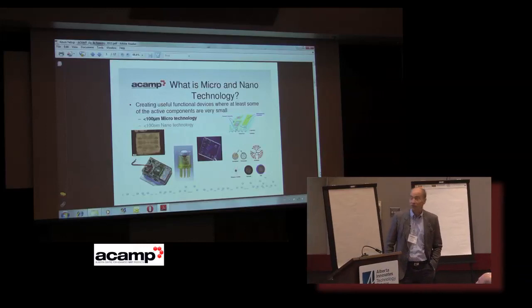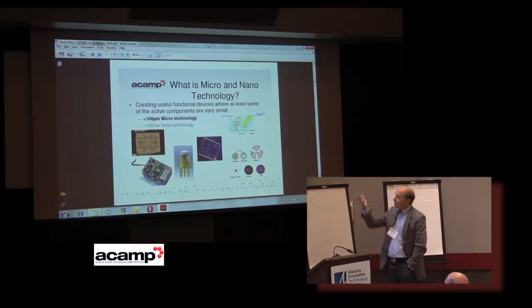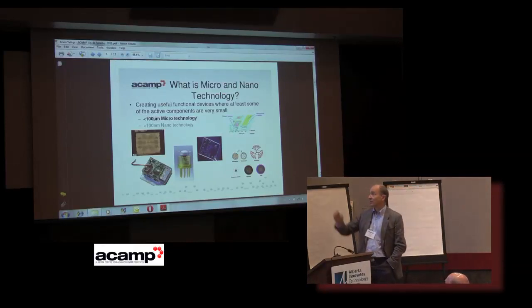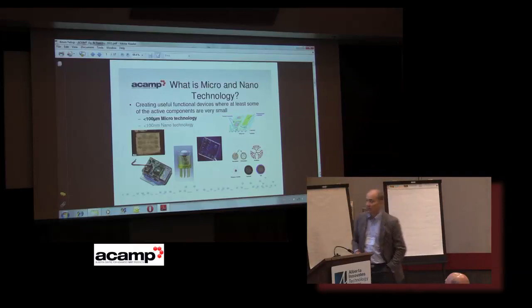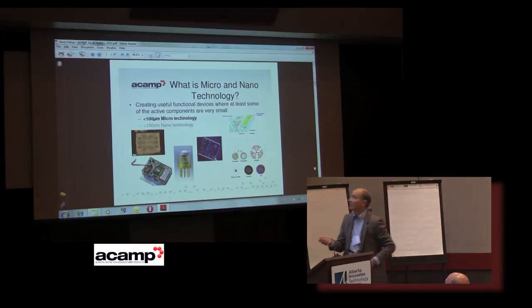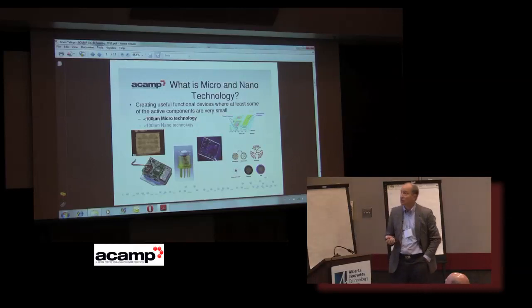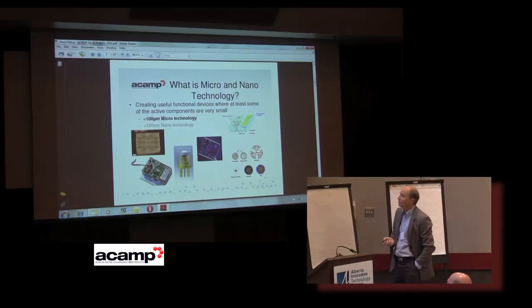That lets us do all sorts of exciting things. We make micromachines. An example at the top left hand corner is a gyroscope. We don't actually make the chips, but we take those chips and turn them into real products by packaging them. For instance, the little device on the bottom left hand corner is an energy harvesting device, which can use a resonant sensor to extract energy from the physical environment.